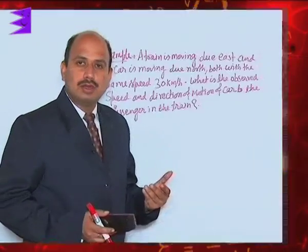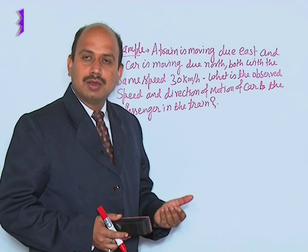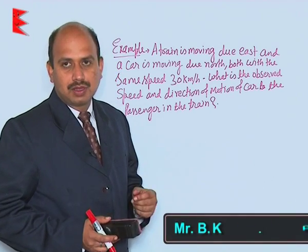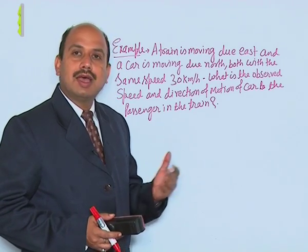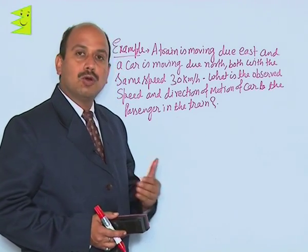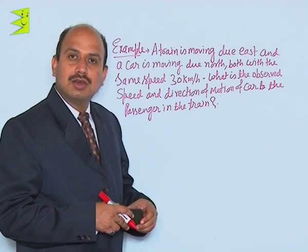You have to calculate the relative velocity of the car with respect to the train, because whatever is the direction of the relative velocity of the car with respect to the train, that will be the direction observed by the passenger inside the train.